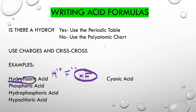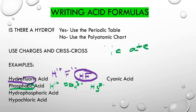Phosphoric acid — there is no hydro. So right there it should tell you that you have a polyatomic anion. We always start with H as our cation. Phosphoric — we have to pay attention to the ending and remember that it came from -ate. So we need to look and find phosphate on our polyatomic ion chart. Phosphate is PO4 with a three negative charge. We do our crisscross like we always have, and we get H3PO4.